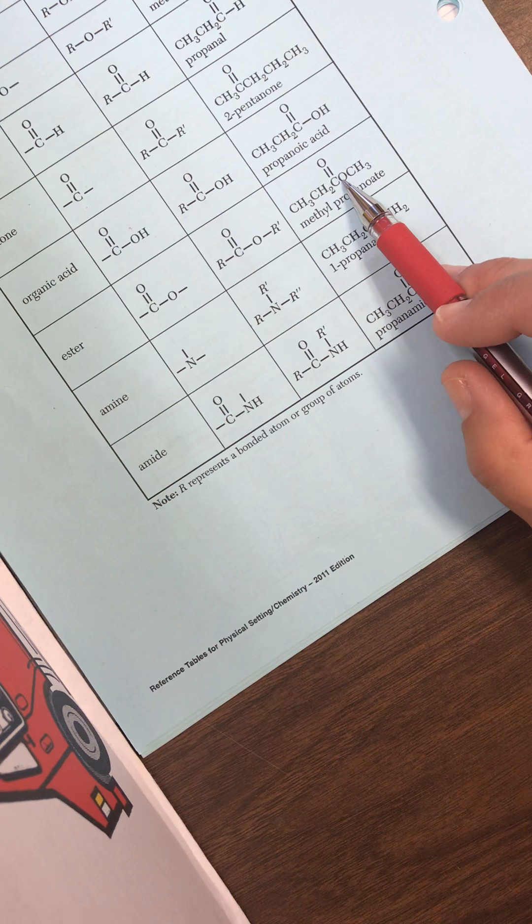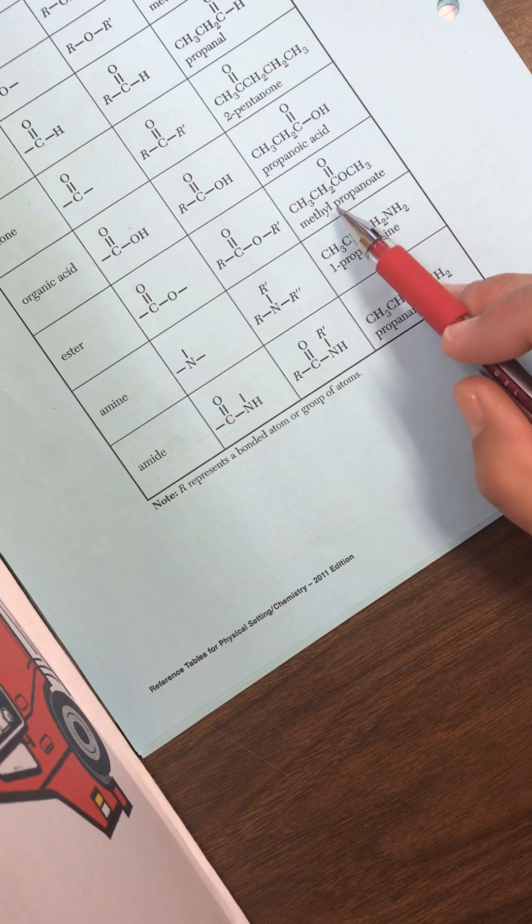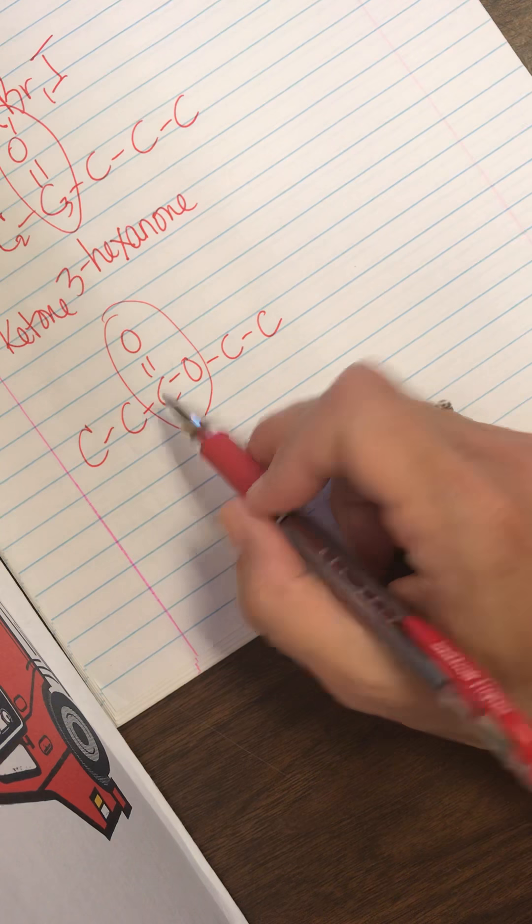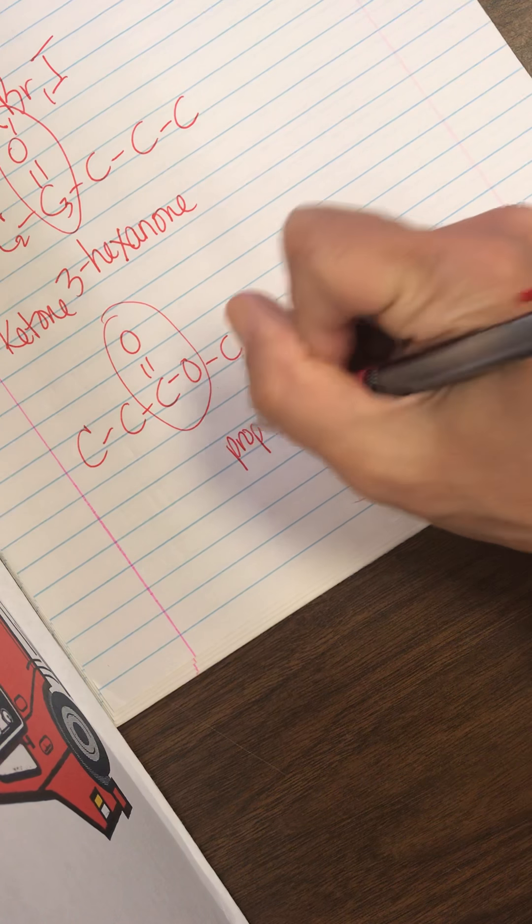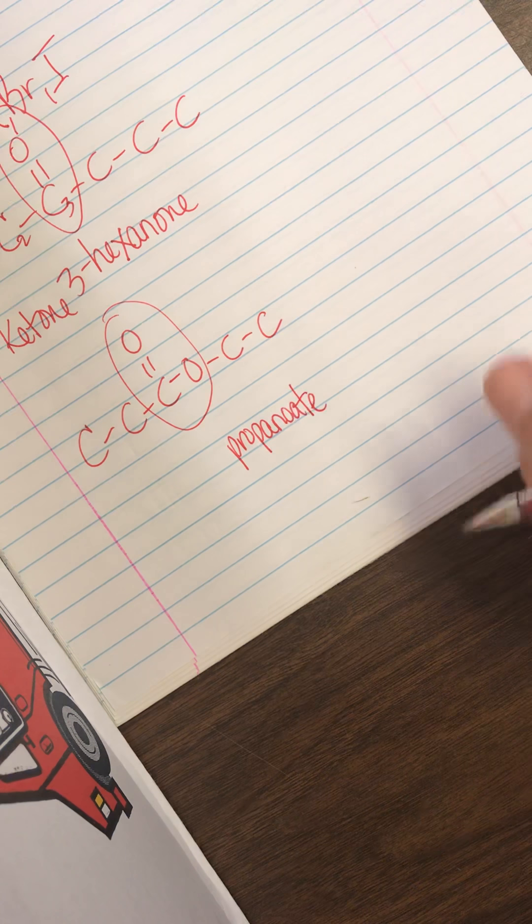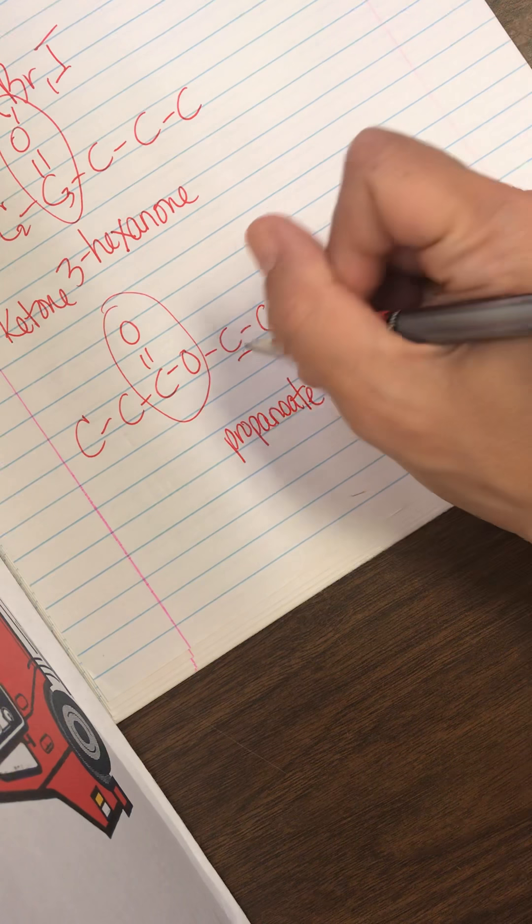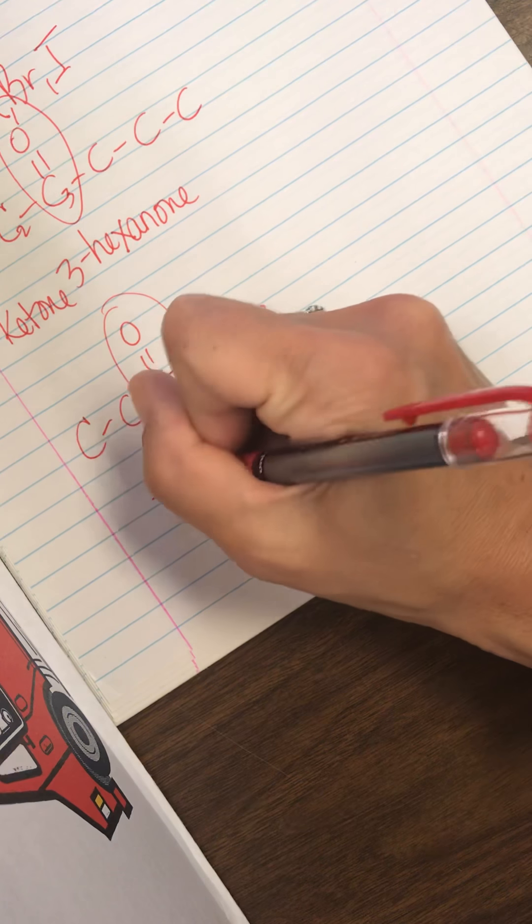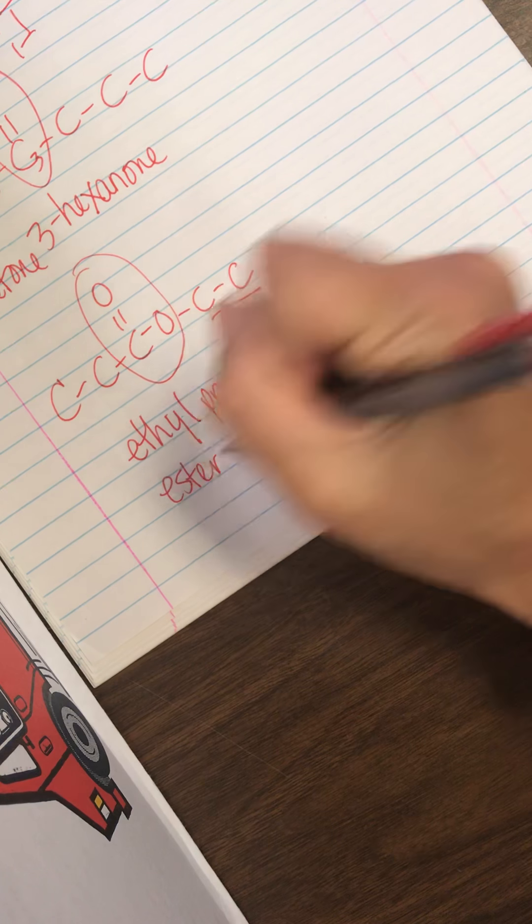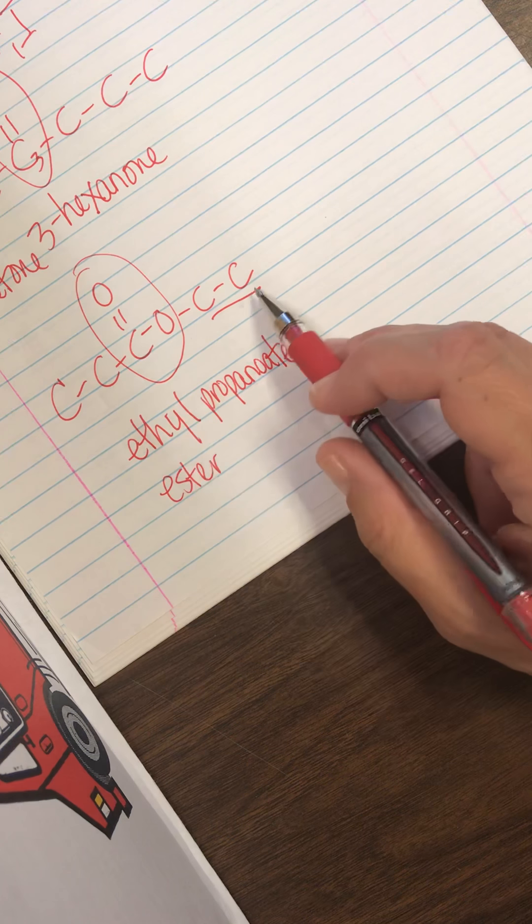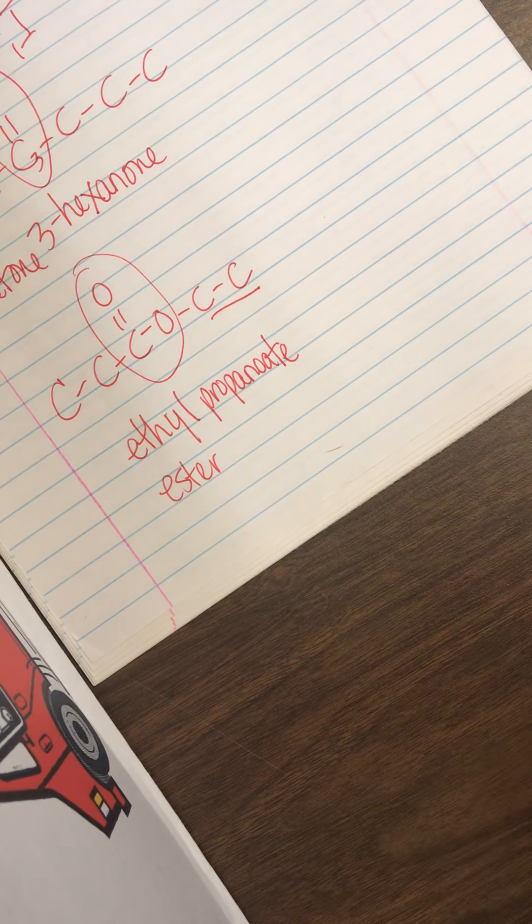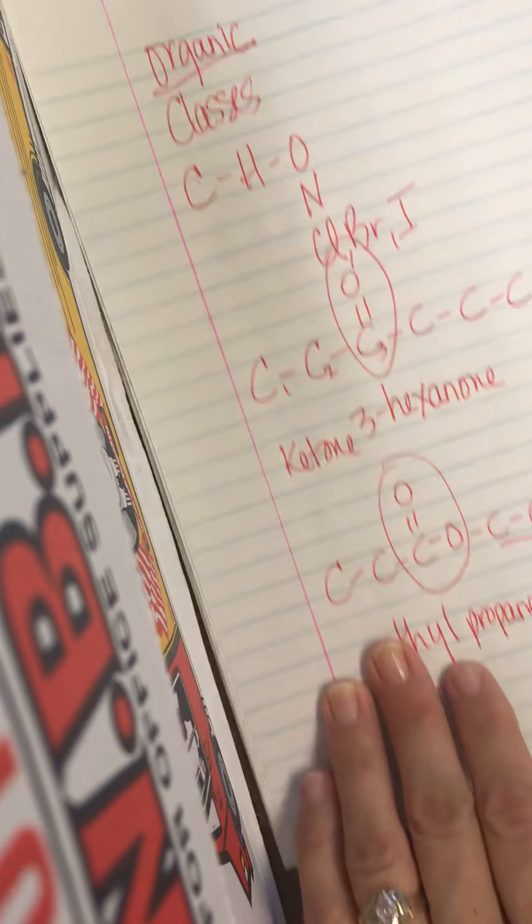Propanoate. Well, I know methyl is one carbon. So the one carbon is the branch that comes after the oxygen. Prop, there are three carbons in the main chain. So propanoate. So I look at mine. One, two, three. I also have propanoate. And then after it, my branch has two carbons. So that's ethyl. So this is an ester. That's the class. And the name of it would be ethylpropanoate. So that is how you read Table R.